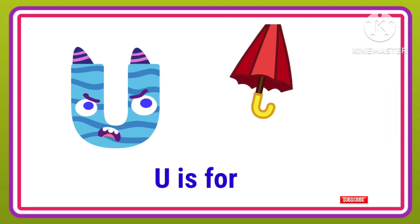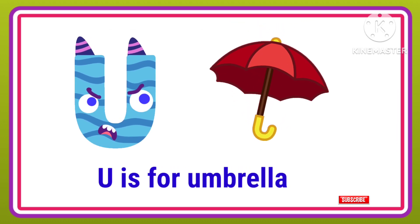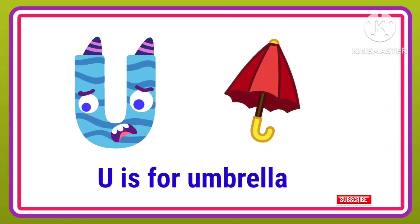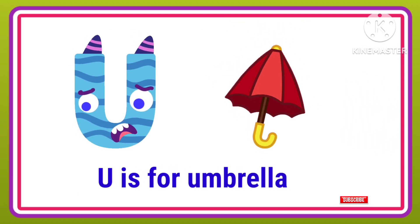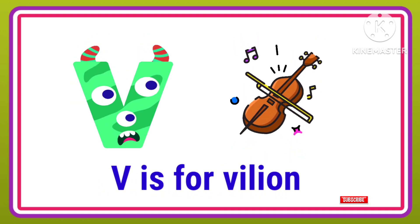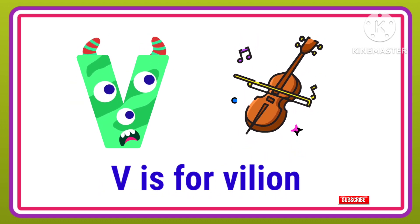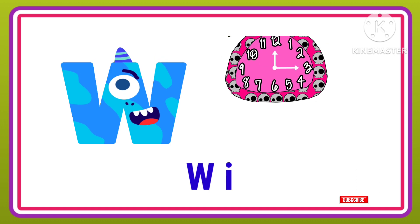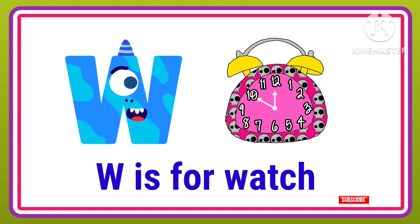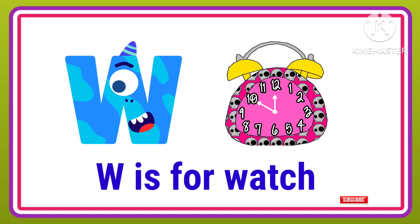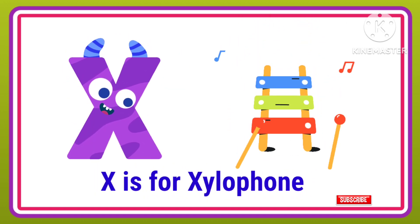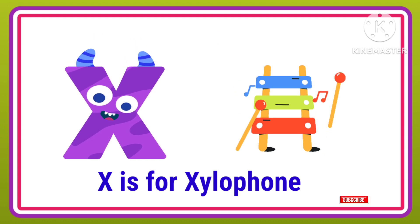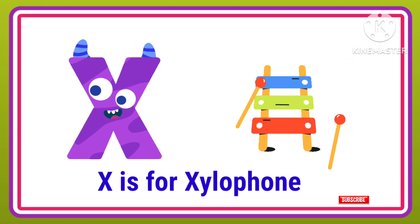U is for Umbrella, U-U-Umbrella. V is for Violin, V-V-Violin. W is for Watch, W-W-Watch. X is for Xylophone, X-X-Xylophone.